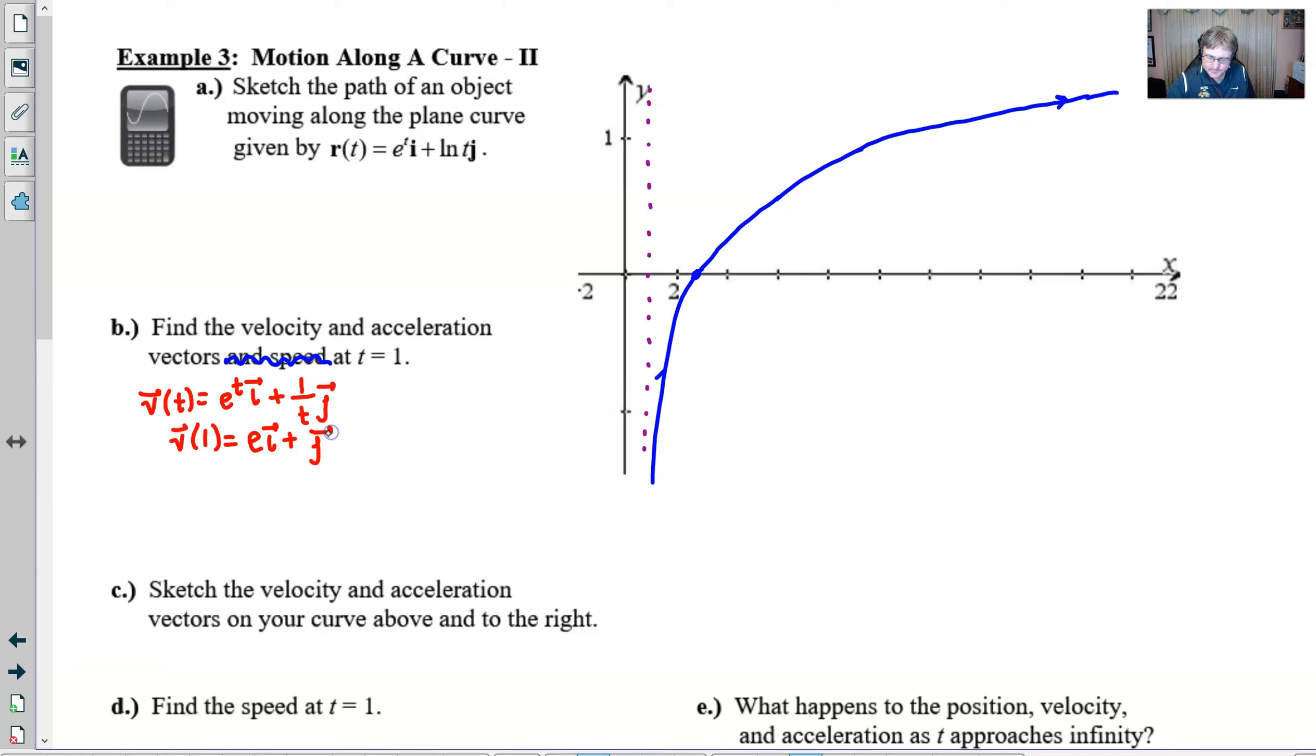For the acceleration vector, take the derivative of e to the t, which is e to the t again. If you take the derivative of 1 over t, you get negative 1 over t squared times j. Evaluate this at 1 and you get e to the first times i minus 1 over 1 times j.